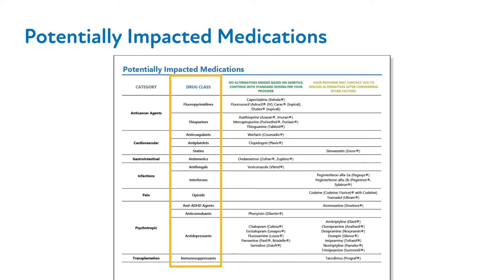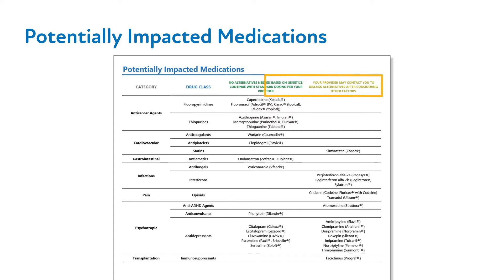The potential drug-to-gene interactions specified by medication are categorized into one of two groups using a stoplight system. Green indicates standard precautions for a medication, meaning there are no drug-gene interactions for the medicines listed in that column. However, medicines listed within the yellow column should be clinically evaluated to determine whether a potential drug-gene interaction is clinically relevant for your patient.